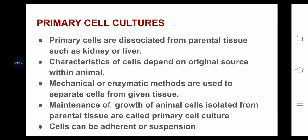Coming to primary cell cultures: they are dissociated from the parental tissues such as kidney or liver. The characteristics of the cells depend on the original source within the animal. Mechanical methods include disruption of the cells using a homogenizer; enzymatic methods use enzymes like trypsin to separate the cells from the parental tissue. Maintenance of the growth of animal cells isolated from parental tissue is called primary cell culture. Primary cell cultures can be adherent or suspension cultures — adherent means anchorage-dependent, and suspension cultures are anchorage-independent.